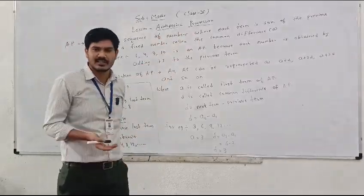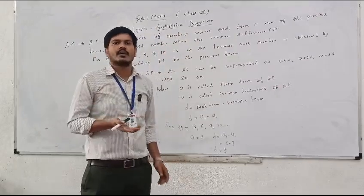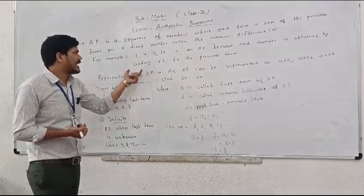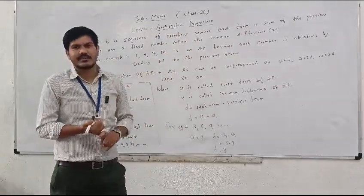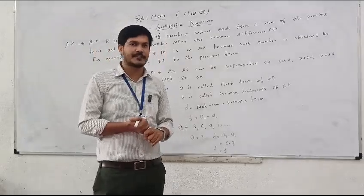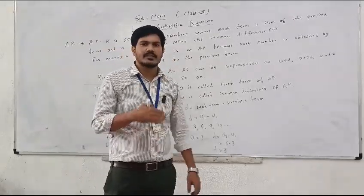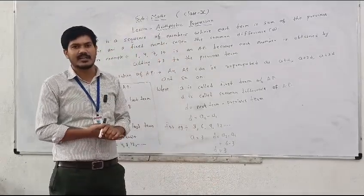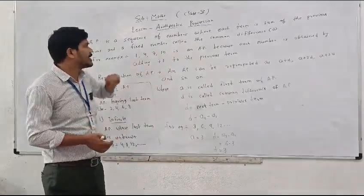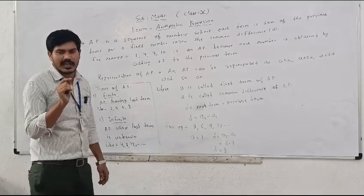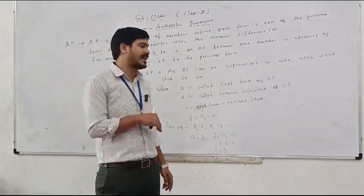You have already studied in the previous class topics like ascending order and descending order, but there is one difference between AP and ascending and descending order. In regular sequences there should not be equal gap between the number series, but in AP there should be an equal gap between the numbers.